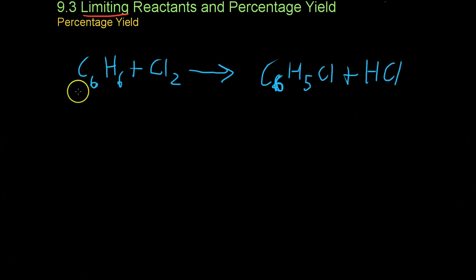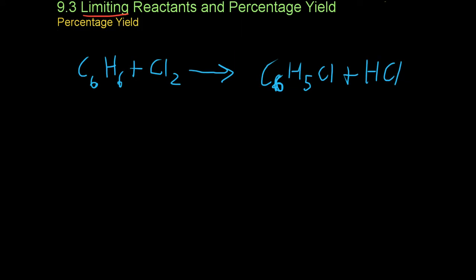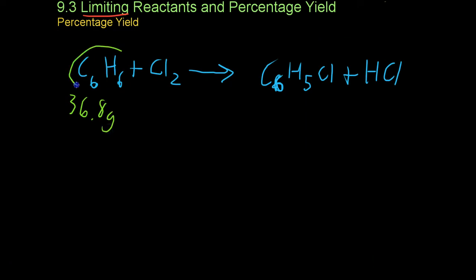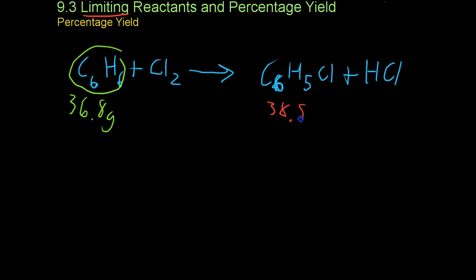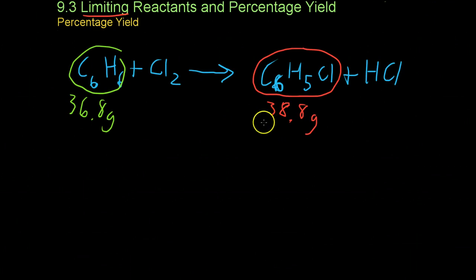For the purpose of this example, we'll use some fake experimental data. We'll say that we started off with 36.8 grams of benzene and ended up with 38.8 grams of chlorobenzene. We already know the actual yield, that is the 38.8 grams of chlorobenzene given to us.